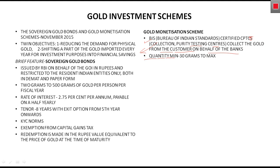Regarding quantity for the Gold Monetization Scheme: the minimum amount you can deposit is 30 grams, and the maximum is no limit. Whatever amount of gold you have, you can invest it into the Gold Monetization Scheme, but the minimum is 30 grams, below which it is not allowed.